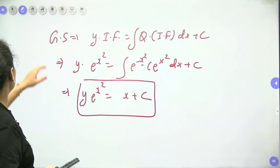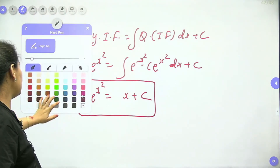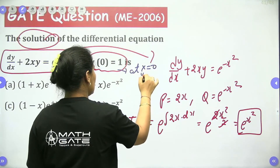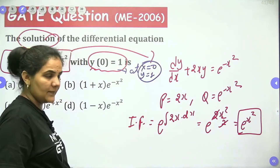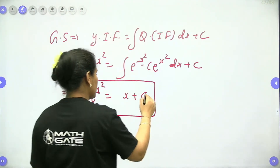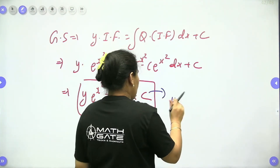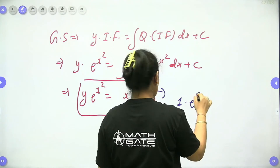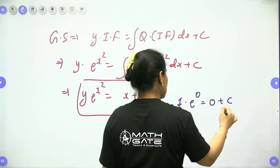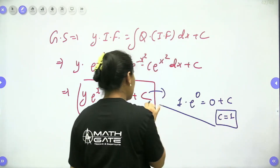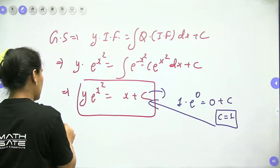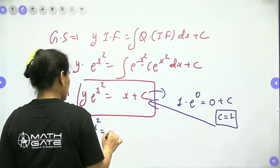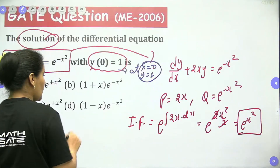Now we have options. We need to find the value of the constant. At x equals 0, y equals 1: substituting gives 1·e^0 equals 0 plus c, so c equals 1. Putting this back, y·e^(x²) equals x plus 1.